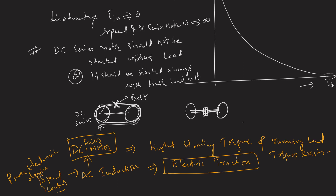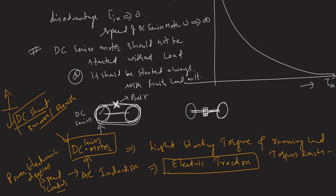The speed control of a DC series motor is limited. Unlike the DC shunt motor which has two methods — field control and armature voltage control — for a DC series motor there is only one method: armature voltage control.